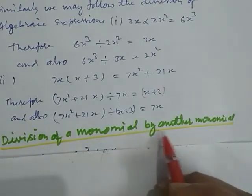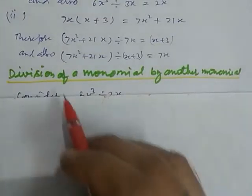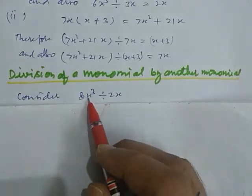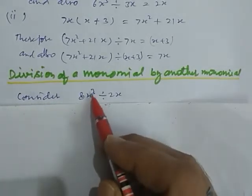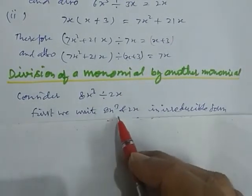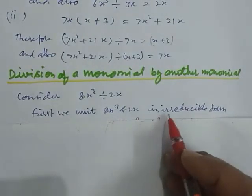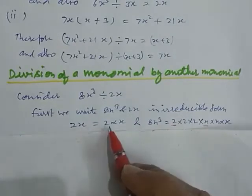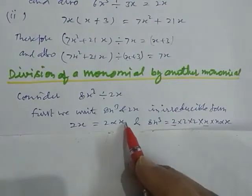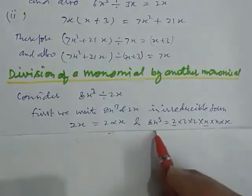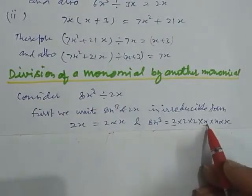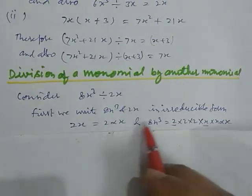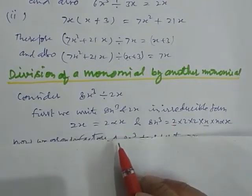Division of a monomial by another monomial. Monomial means any expression containing a single term. Consider 8x cube divided by 2x. First, we write 8x cube and 2x in irreducible form — that is, a form that cannot be reduced further. So 2x equals 2 into x, and 8x cube equals 2 into 2 into 2 into x into x into x. Whatever we want to divide, first we factorize them, then we divide — so we get the result easily.